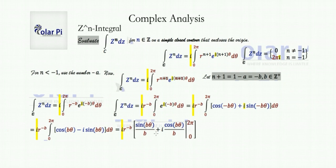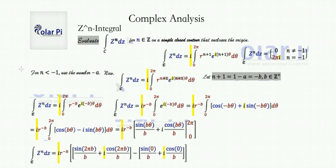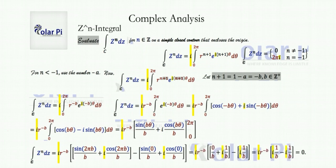We write minus i times sine b theta as plus i times negative sine b theta, since the antiderivative of negative sine is cosine. After integrating from 0 to 2 pi, we evaluate the result. Since b is in the positive integers, sine of 2 pi times b equals sine of 2 pi which is 0, and cosine of 2 pi times b equals cosine of 2 pi which is 1. Also sine of 0 is 0 and cosine of 0 is 1. So we get a constant times i times 1 over b minus i times 1 over b, which equals 0.